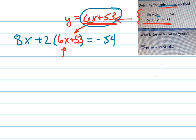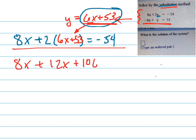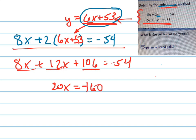Now I have one equation in one variable, and I can solve this by the same methods we always use. Distribute the 2 in — that would be 12x plus 106 equals negative 54. Add the x's together, I get 20x equals — now I subtract the 106, because it's being added — so that would be negative 160, because this was a negative 54 on the right. And now I divide both sides by 20, and I get negative 8.